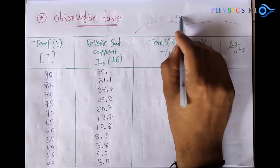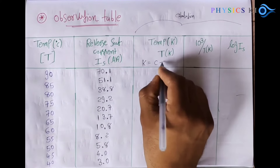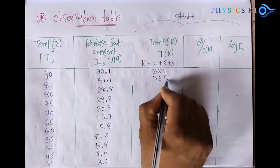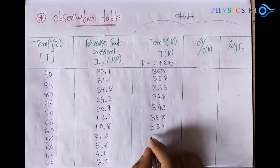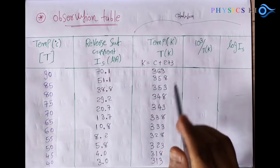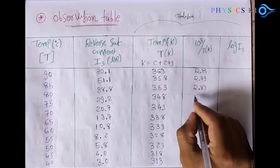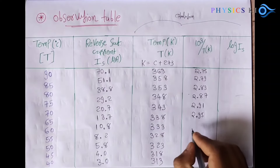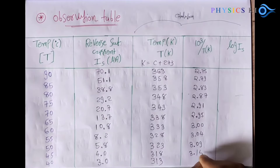Now for the calculation part: the third column is temperature in Kelvin. To convert, add 273 — so 90 + 273 = 363, 80 + 273 = 358, and so on. The fourth column is 10³ divided by T. So 1000 / 363 = 2.75, and 1000 / 358 = 2.79. Use a calculator to fill in this column for all temperature values.